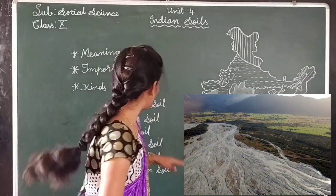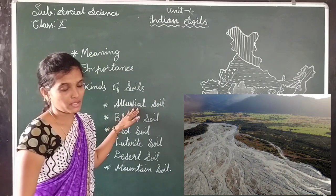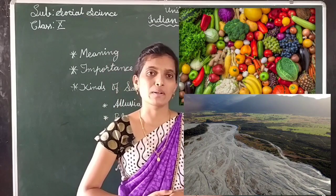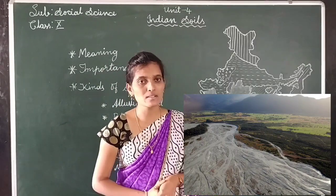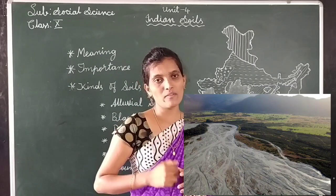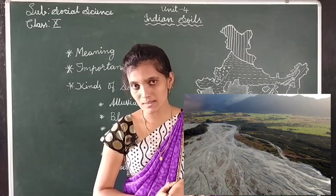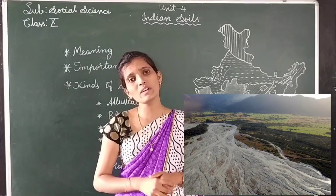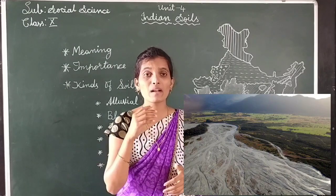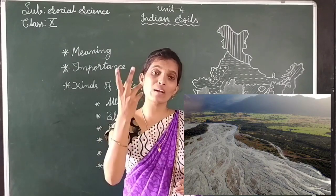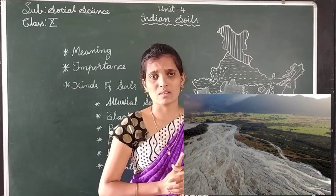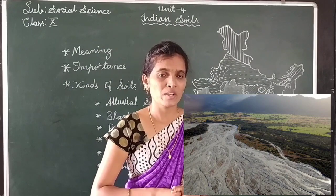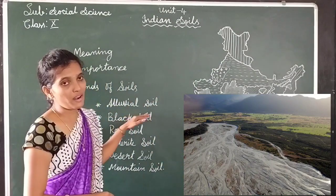Some crops can be grown in alluvial soil. The crops are paddy, sugarcane, cotton and vegetables. In alluvial soil, there are two types: khadar and bangar. Khadar is the new type of alluvium and bangar is the older alluvium. These two words are used by north Indian people in their language. So this is about alluvial soil.